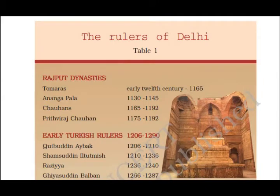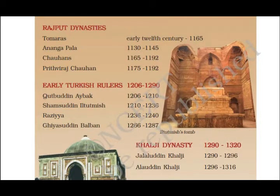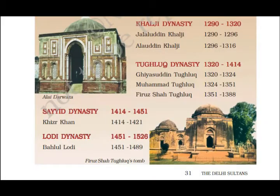The first to rule Delhi were the Tomars, followed by Anangpal Chauhan and then Prithviraj Chauhan. After the Rajput dynasties came the Turkish rulers — Qutbuddin Aibak, Shamsuddin Iltutmish, Raziya, and Ghiasuddin Balban. Then came the Khalji dynasty with Jalaluddin Khilji and Alauddin Khilji, followed by the Tughlaq dynasty with Ghiasuddin Tughlaq, Muhammad Tughlaq, and Firoz Shah Tughlaq. The Sayyid dynasty had Khizr Khan, and the Lodi dynasty had Bahlul Lodi. After them came the Mughal dynasty, which ruled Delhi for a very long time.